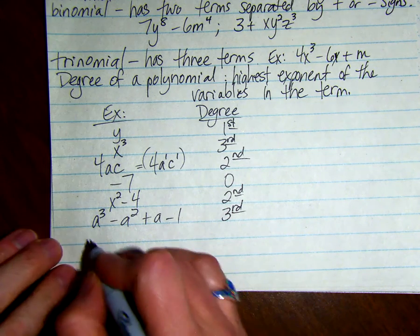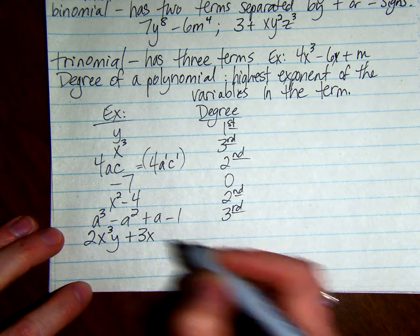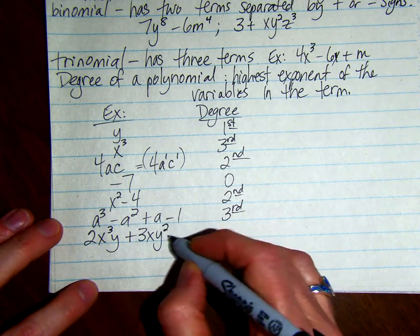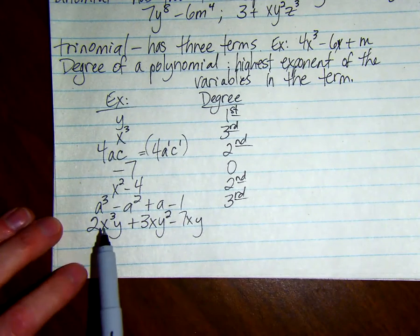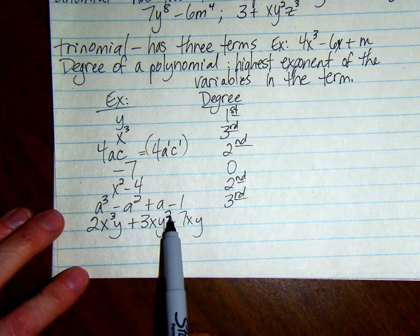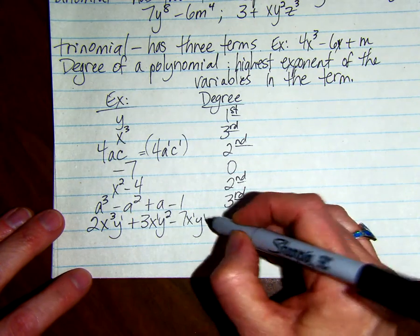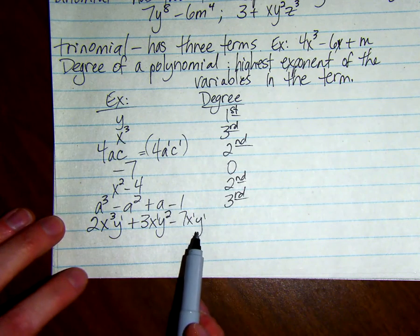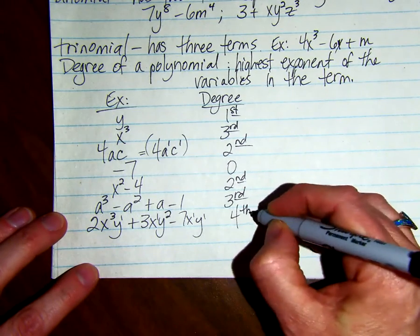Here is another example: 2x cubed y plus 3xy squared minus 7xy. We'll look at each term. This term is degree 4. The second term is degree 3, so you have to add these little ones in. And the last term has a degree of 2. So the highest one was 4, so this is of the fourth degree.